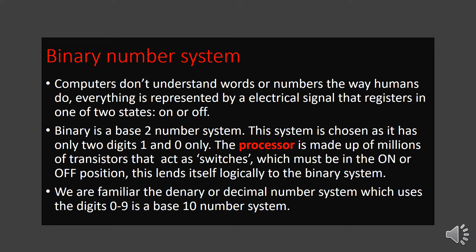The binary number system is very important as it communicates with hardware devices and enables processing. Whatever information is stored in the computer must first be translated or converted to the binary number system before the computer can process it. We are also going to see the decimal number system, which has digits 0 to 9 and is a base 10 number system.